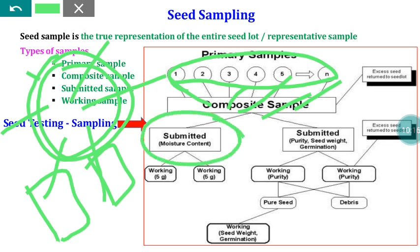After the composite sample is arrived at, we go for mixing and dividing in order to obtain the prescribed quantity of the submitted sample. The seed testing protocols specify a prescribed quantity for submitted and working samples. For example, for paddy we need to submit 400 grams as the submitted sample to the seed testing laboratory. In the laboratory, they will convert that 400 grams into 40 grams as the working sample.